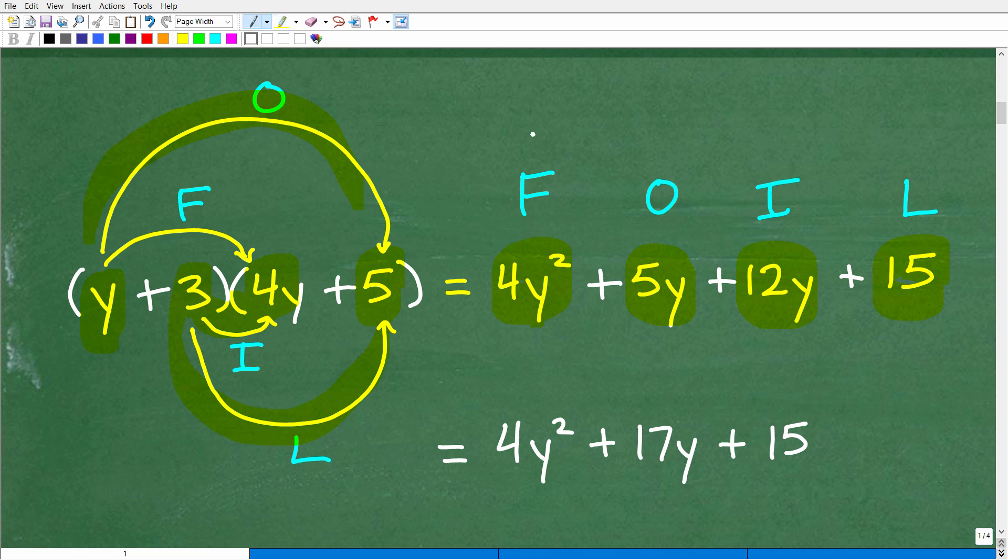Okay, so this is our FOIL, first, outer, inner, last. But now we have to combine like terms, and 5y and 12y, these are like terms. 4y squared, there is no other y squareds. There are no other numbers. But these two here are like terms. So you have to understand like terms and how to combine like terms to know how to successfully use the FOIL method and do polynomial multiplication. So anything you're not quite understanding, you need to go back and review.